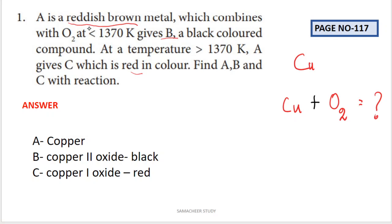First, a hint is A is a reddish brown metal. If you study metallurgy, you have three different metals: copper, aluminum, and iron. If you study copper, you have reddish brown color. So if you identify A is copper, this is easy to identify.